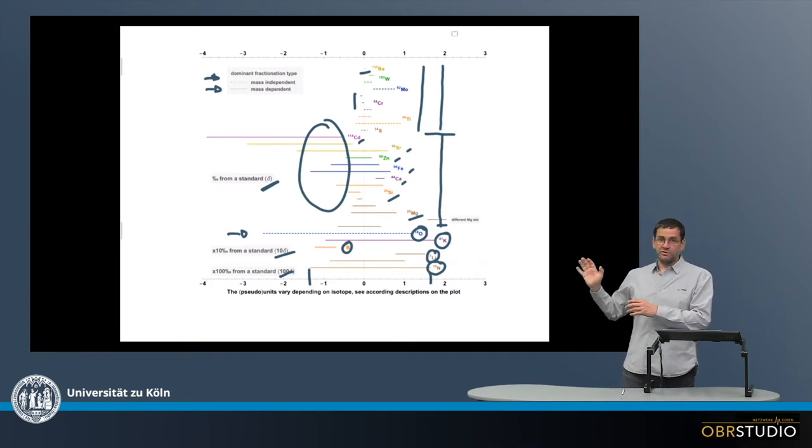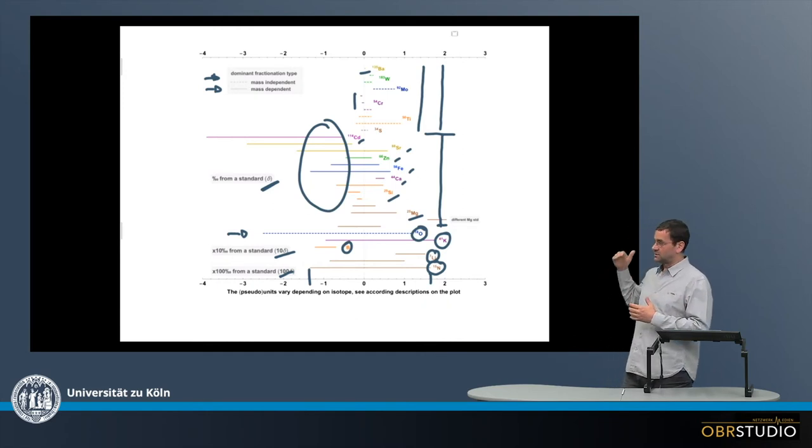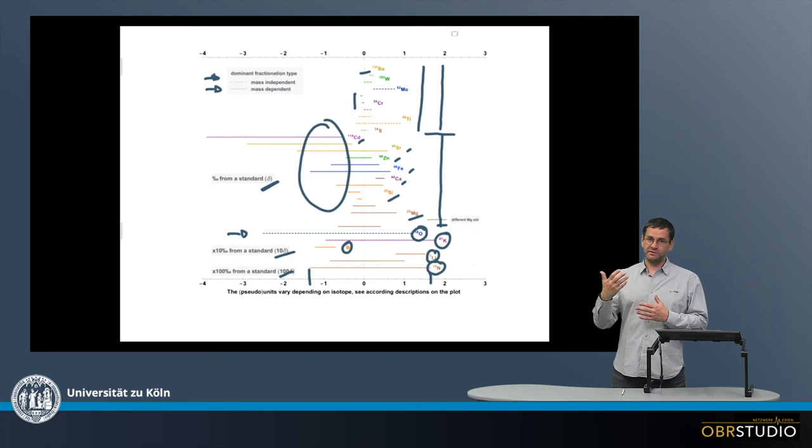This is more to show how the chondrites vary in the isotope composition, and these can then be used for a large variety of interpretations that need to be gone through in more detail and step by step. So this is isotope composition of chondrites.